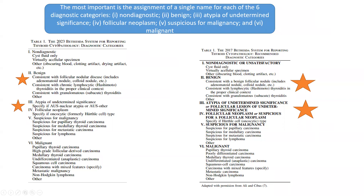Table one shows the 2023 Bethesda System for Reporting Thyroid Cytopathology. It has defined six categories in all. Category one is non-diagnostic — this includes cystic fluid only, or virtually an acellular specimen, or other cases with obscuring blood, clotting artifact, or drying artifact. What is important to note here is that the word 'unsatisfactory' has been removed from the 2017 grading. So in the latest classification, category one is just non-diagnostic.